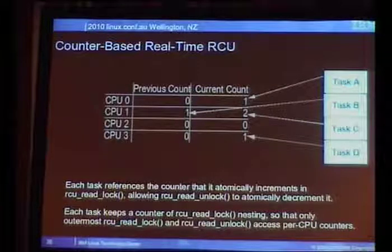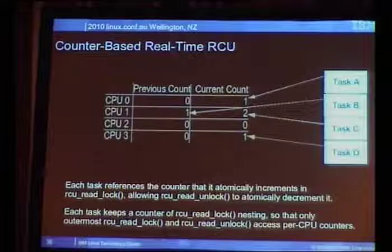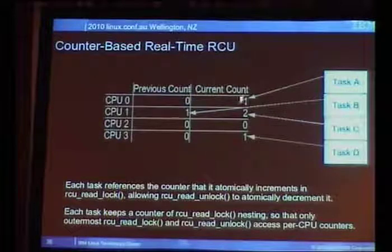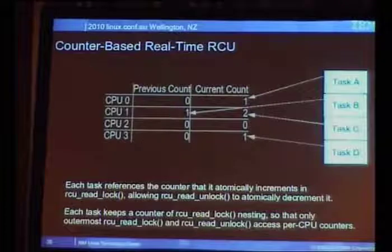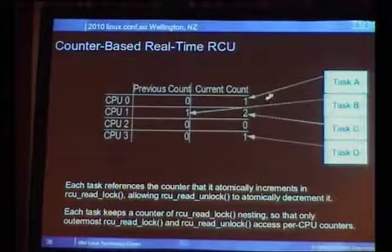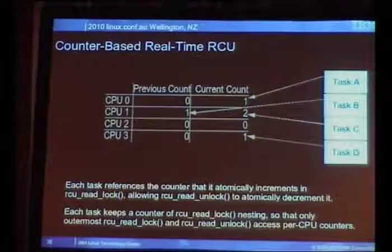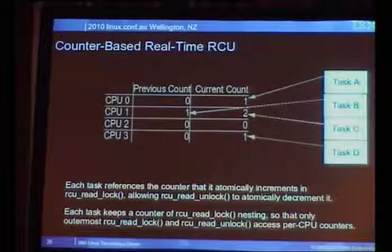To achieve real-time deadlines, you have to be able to preempt RCU read-side critical sections, because some of them are longer than tens of microseconds. That means you might see context switches inside RCU read-side critical sections, so you can say goodbye to zero-overhead RCU read_lock and read_unlock — you have to do something explicit, you have to be able to tell that readers are there. This is where a lot of the complexity came from. The solution used counters: each CPU has a pair of counters, one for the current grace period and one for the previous grace period.